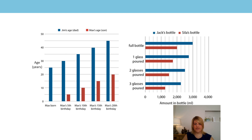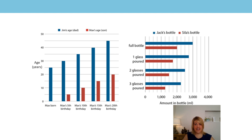Let's look at both of the graphs now that we've just studied. What did you notice about both of them? What's different in each graph? Did you spot that one was vertical and one was horizontal? Well done if you did. What's the same about both graphs? That's right — the difference every time. In the first one, Jim and Max's ages had a difference of 25 years every single time. And in the second one, Jack and Scylla's bottles had a difference of 1000 every single time. So the difference is staying the same when we change the other values by the same amount each time.